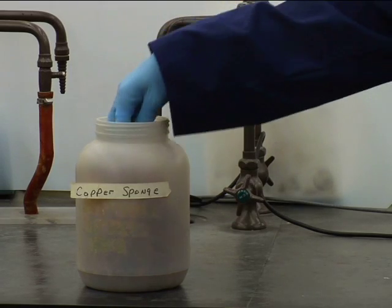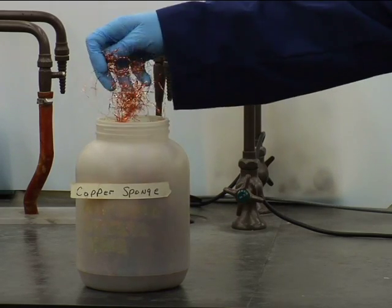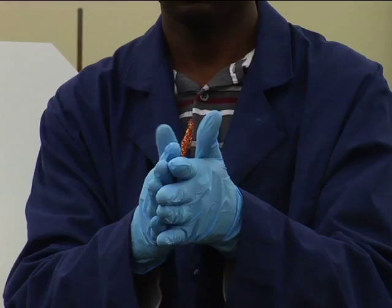Let's set up the experiment. First, pack the fractionating column loosely with about 0.8 grams of copper sponge.